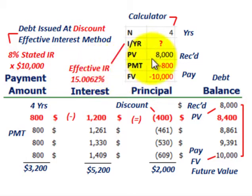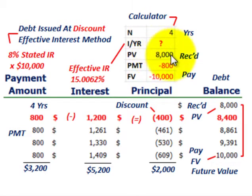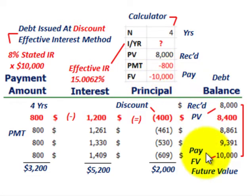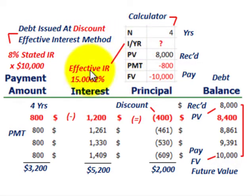To find the effective interest rate using the calculator: enter four years for the number of periods. The present value is $8,000 — the amount received. Enter the $800 cash payment as a negative number. The future value is $10,000 — what we have to pay out at maturity — also entered as negative. Hit the interest button and you'll get an effective interest rate of 15.0062%. That's what we'll use to amortize this note.